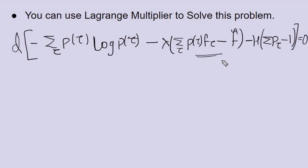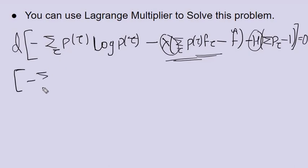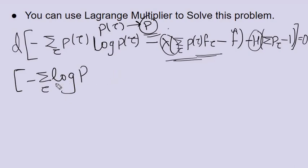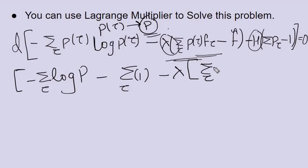If you're unfamiliar with solving this type of optimization, I'll put a link in the description. Taking the derivative with respect to p(tau) — substituting p(tau) as p for brevity — the first term gives log p(tau) plus one (since d/dp [p log p] = log p + 1). The lambda times f(tau) term simply becomes f(tau), and the normalization constraint contributes minus mu times one. So we get: log p + 1 + lambda·f(tau) - mu = 0.